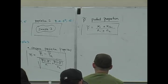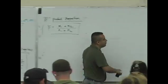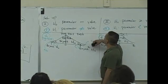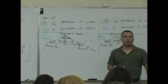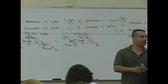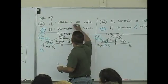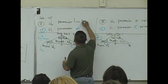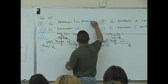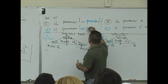So this is the test statistic associated with comparing two means and two proportions. I also need to modify the decision rule. Before, you had a parameter compared to a value. Now you're comparing two parameters — parameter one versus parameter two — and the hypotheses are set up accordingly, such as parameter one not equal to parameter two.